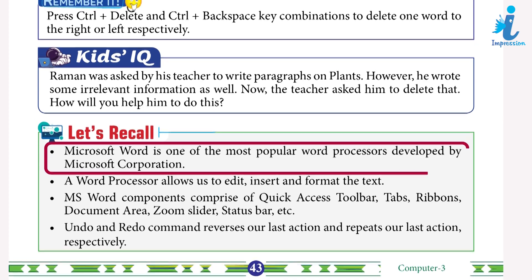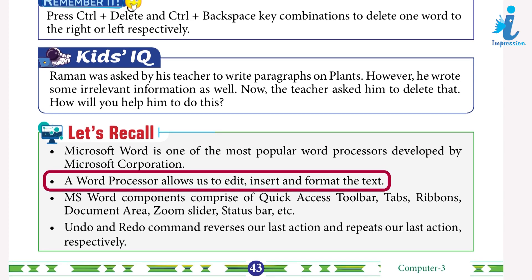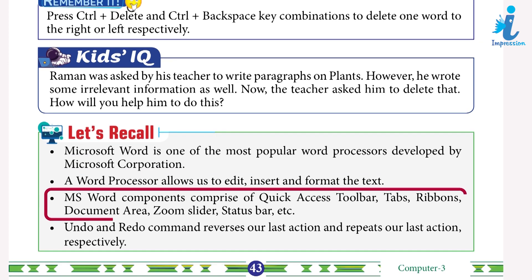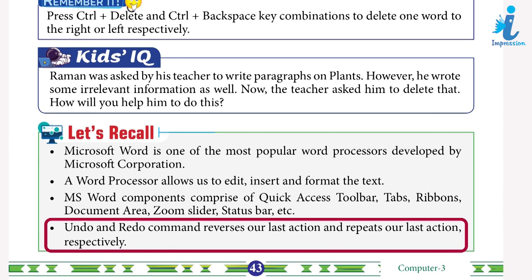Let's recall: Microsoft Word is one of the most popular word processors developed by Microsoft Corporation. A word processor allows us to edit, insert, and format text. MS Word components comprise the Quick Access Toolbar, tabs, ribbons, document area, zoom slider, status bar, etc. Undo and redo commands reverse and repeat our last action respectively.